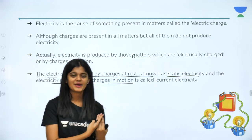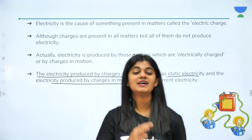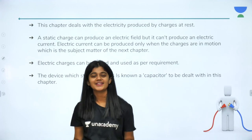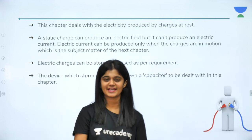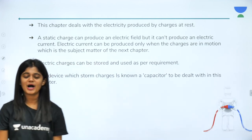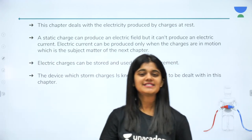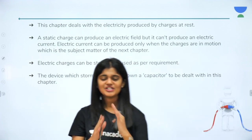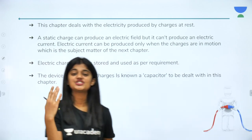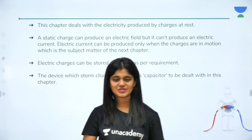That is why today we will talk about static electricity and how is the introduction and origin of charge. First in this chapter, we will deal with charges at rest. A static charge is nothing but one which can produce an electric field but cannot produce an electric current.